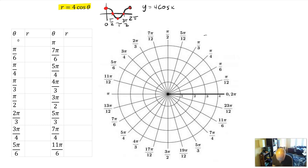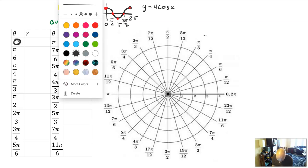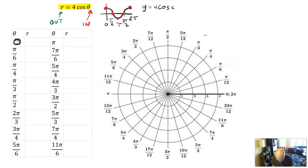Let's start filling out our table. The first theta value is 0 — remember, theta are the inputs and r are the outputs. We're looking at r as a function of theta. What's the cosine of 0? The cosine of 0 is 1, times 4, so the radius at theta equals 0 should be 4.